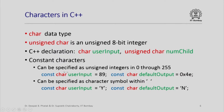How do you declare char or unsigned char in C++? You put the type declaration, in this case char, followed by the variable name, or you can say unsigned char followed by the variable name. Constant characters can be specified as unsigned integers in 0 through 255. For example, you could say const char user_input = 89, or const char default_output = 0x4E (hexadecimal). Constant characters can also be specified as a character symbol within single quotes — for example, const char user_input = 'Y' and const char default_output = 'N'. The decimal 89 is indeed the code for uppercase Y and hexadecimal 4E is the code for uppercase N.